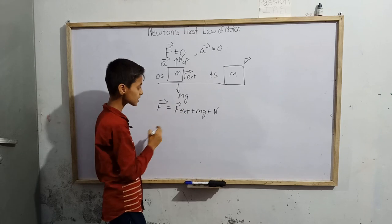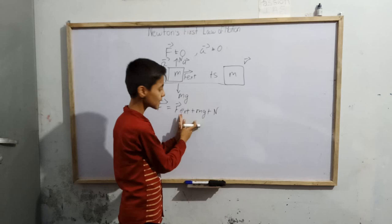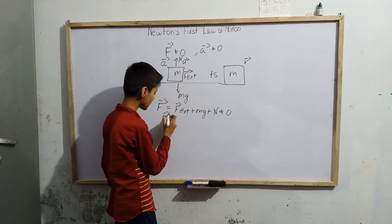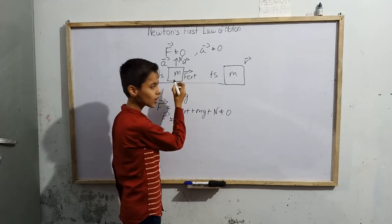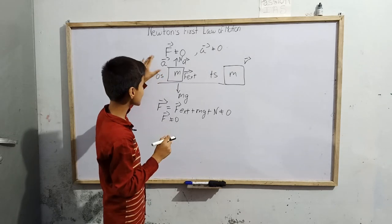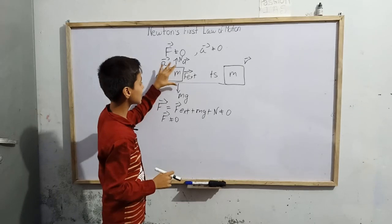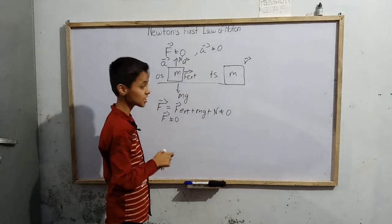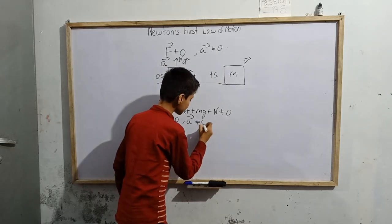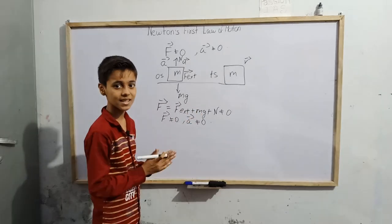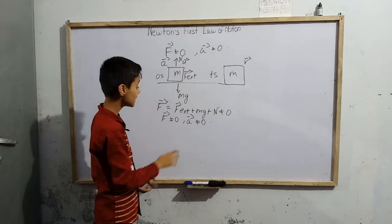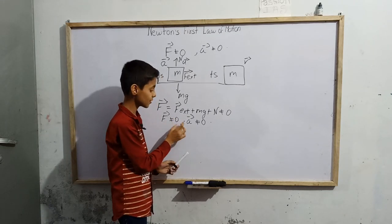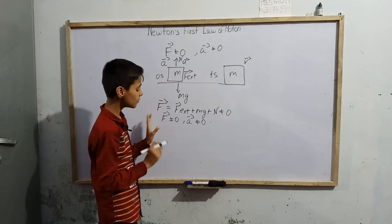We can see that the sum of forces is not equal to zero because of these multiple forces being added. So F is not equal to zero, and A is not equal to zero. This proves Newton's first law of motion: when F is not equal to zero, acceleration is not equal to zero; and when F equals zero, acceleration is also zero.